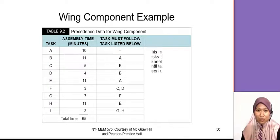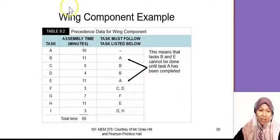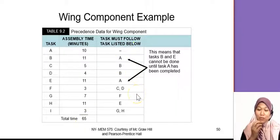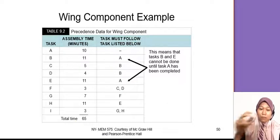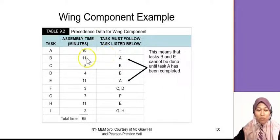This is an example for the wing component. To make the wing component, there are tasks A until I, and these are the times that are needed. For task A, it takes 10 minutes, then next go to task B, C, and so on. It takes about 65 minutes. These are the following tasks. There's a rule to follow. From one task to next task, what are the sequence. It's very important to know. For example, task A is the starting point. A going to B, B going to C, B going to D, A going to E.